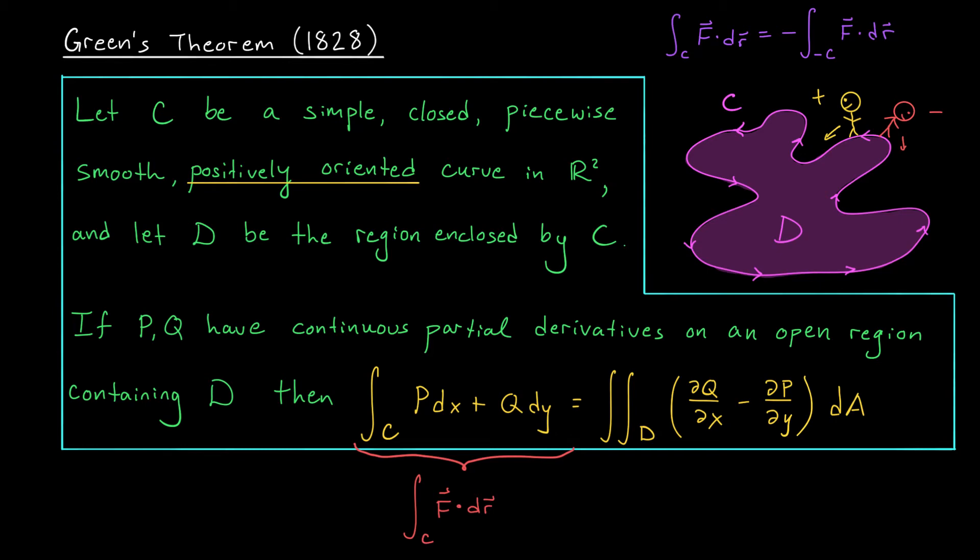However, Green's theorem only applies to curves that are closed and satisfying these other assumptions. The fundamental theorem for line integrals applies to curves that are not closed. If you happen to be working with a conservative vector field over a closed curve C, then both theorems apply. According to the fundamental theorem of line integrals, the integral along that curve would be zero. We saw that in a previous video. If the curve is closed and the vector field is conservative, the fundamental theorem says the line integral is zero.